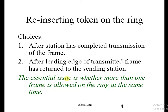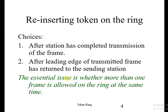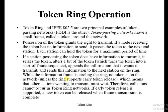The essential issue is whether more than one frame is allowed on the ring at the same time. This is a critical issue in token ring. The answer is no — token ring only allows one token at a time. It is not possible to have two frames or two tokens on the ring simultaneously.